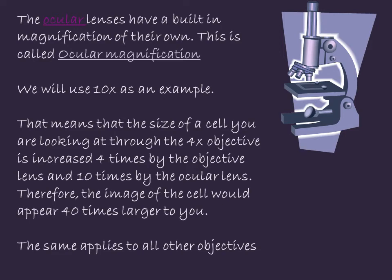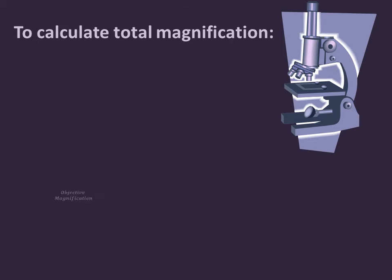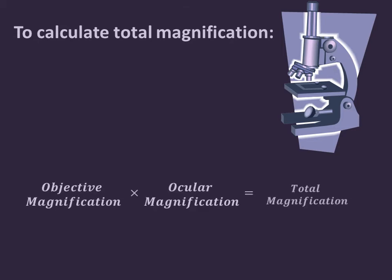Now let's look at it more closely. To calculate total magnification, there is a formula, which we've already discussed. It's very intuitive and simple: you multiply the objective magnification by the ocular magnification to get the total magnification. Let's see examples.